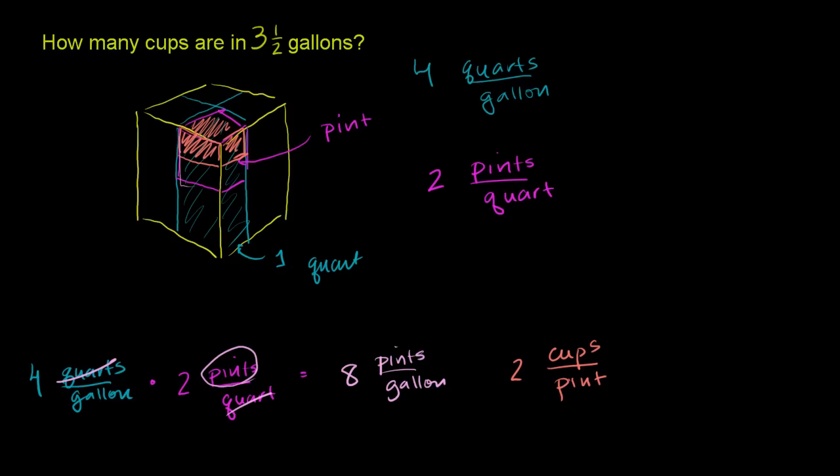And the reason why this will work is because you have pints in the numerator. It cancels out with pints in the denominator. And you will be left with, I'll go back to the yellow, 8 times 2 is 16. In the numerator, we have cups per gallon.